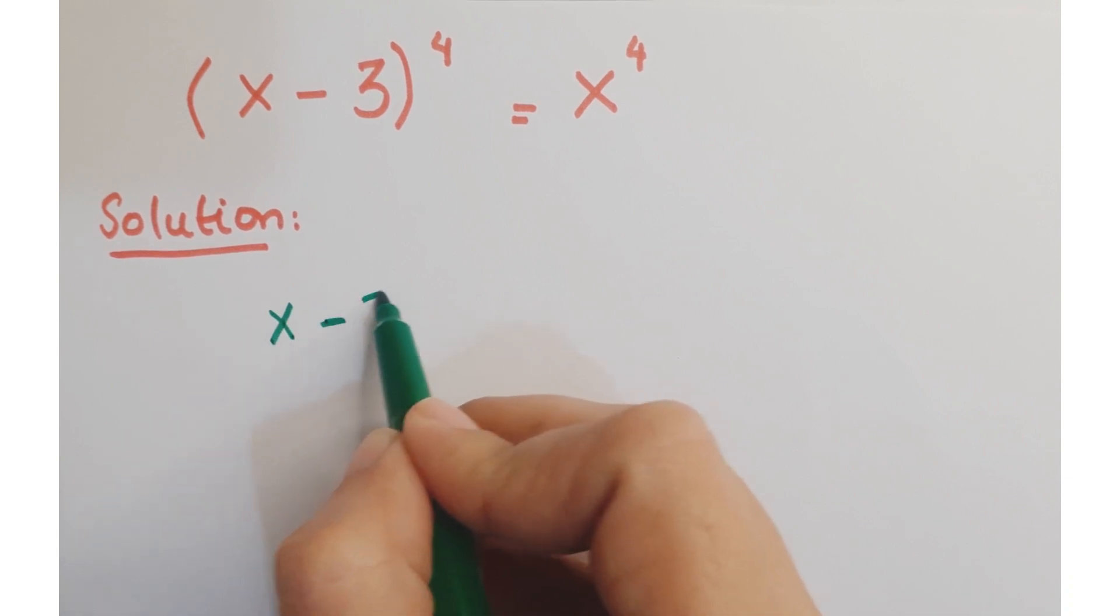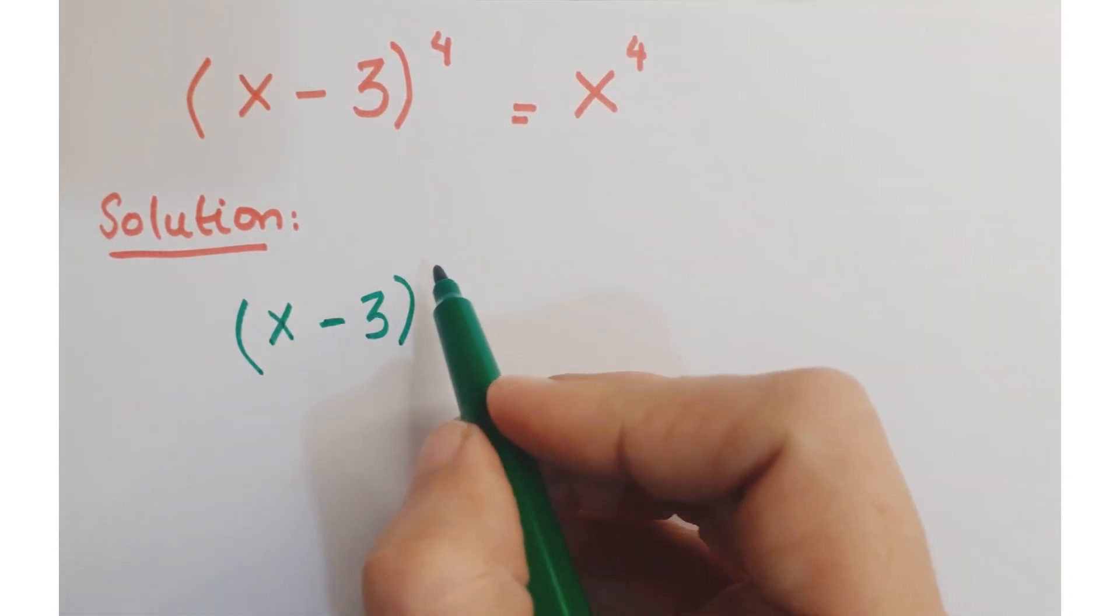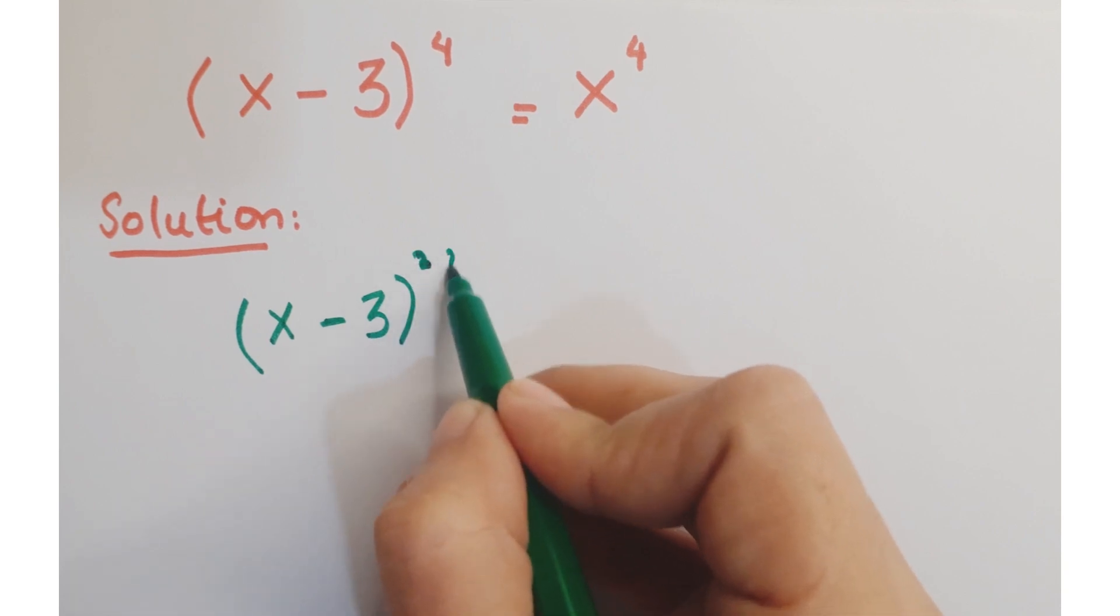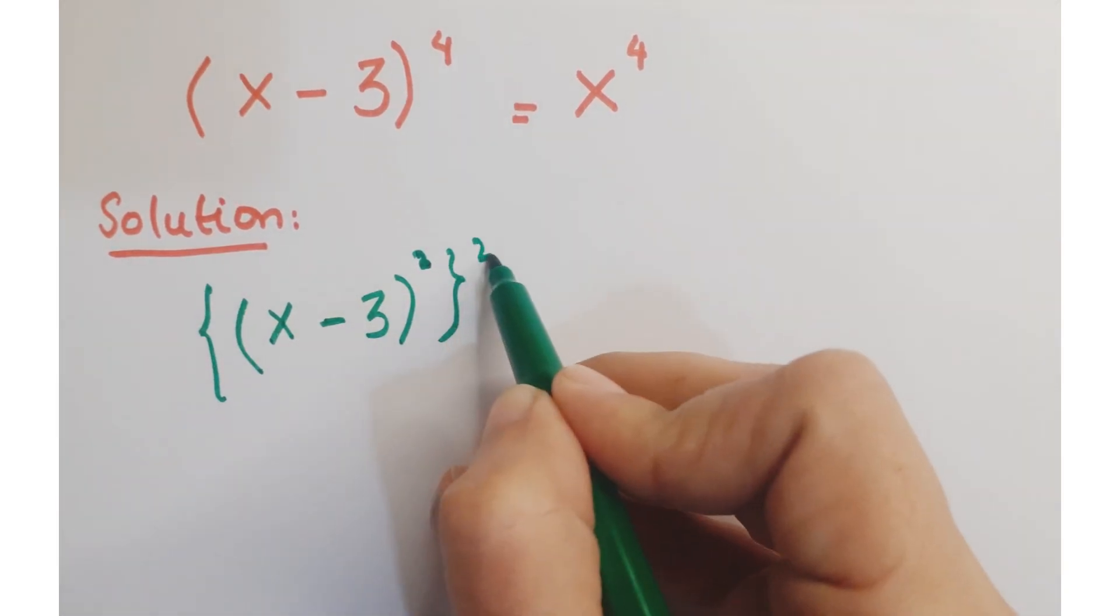Let's see how do we proceed in this question. We can write this x minus 3 whole to the power 4 as x minus 3 square whole square.